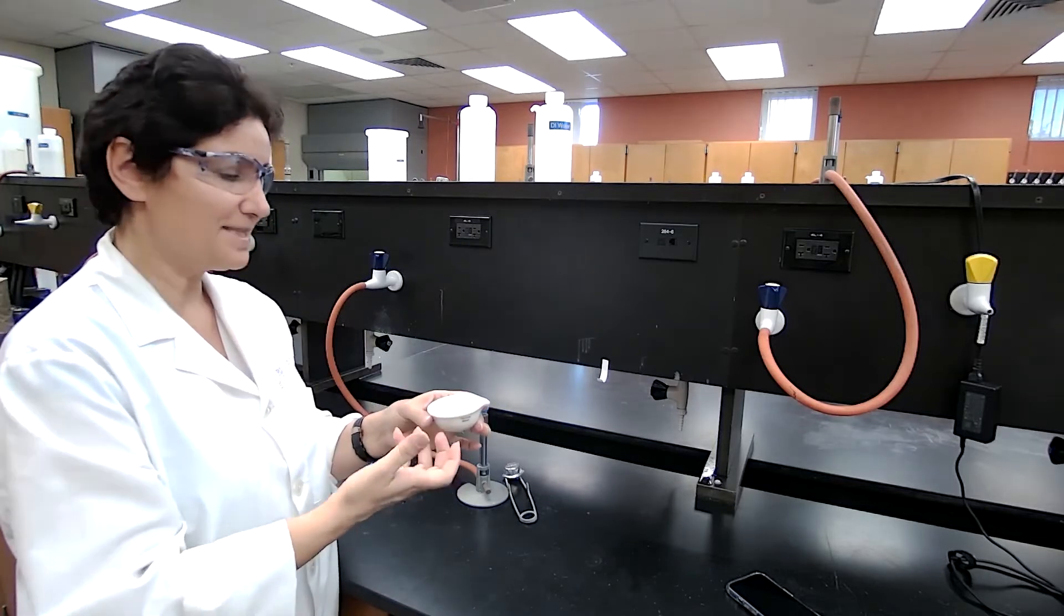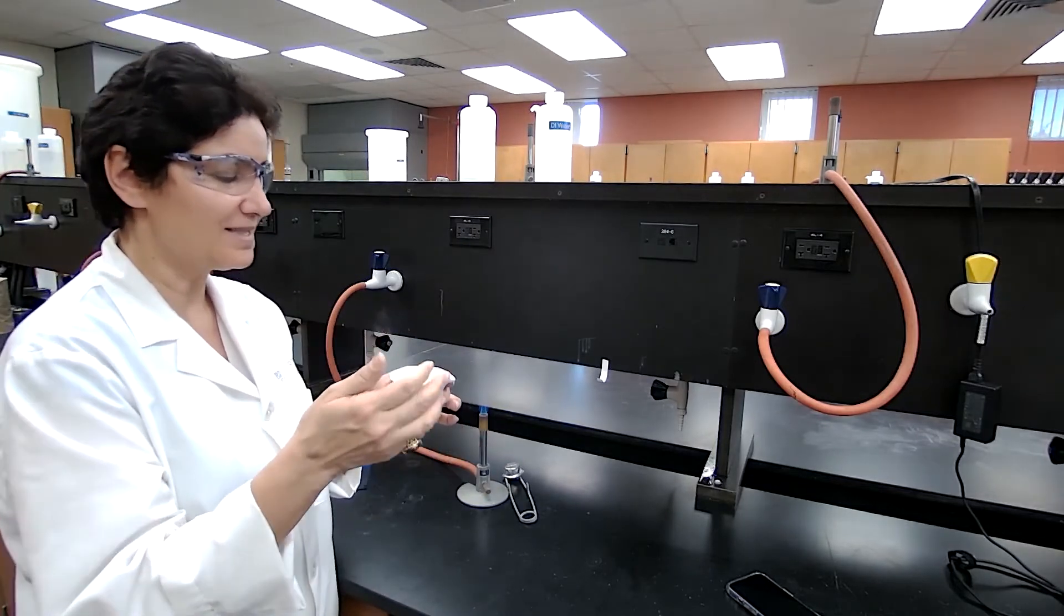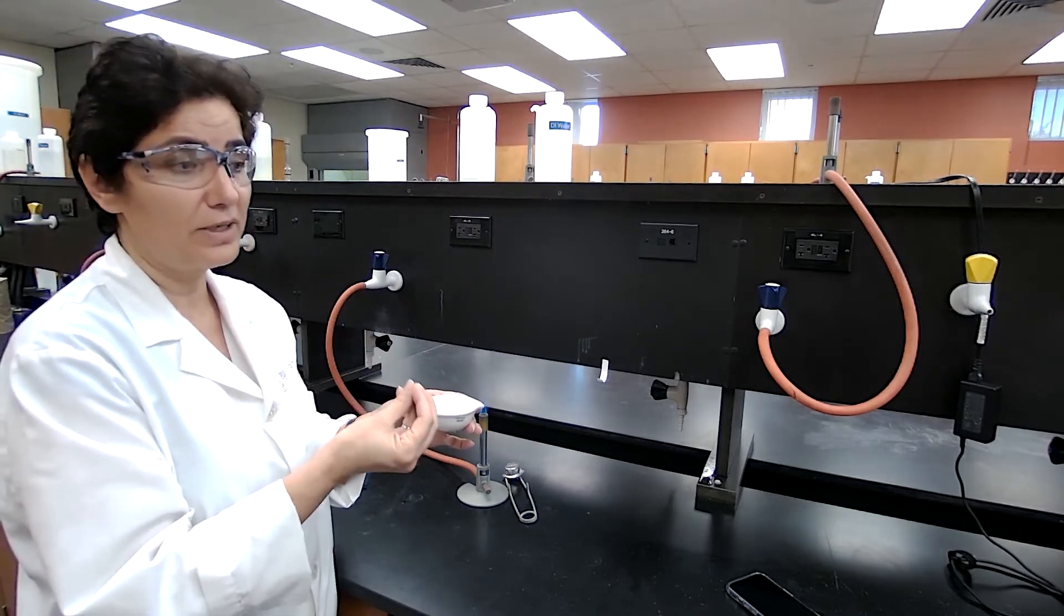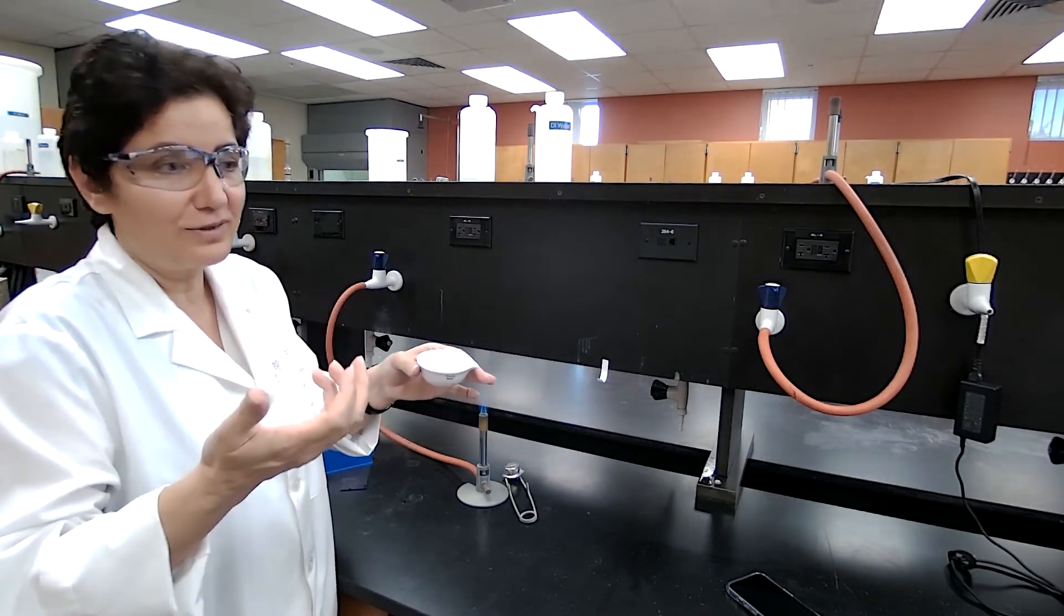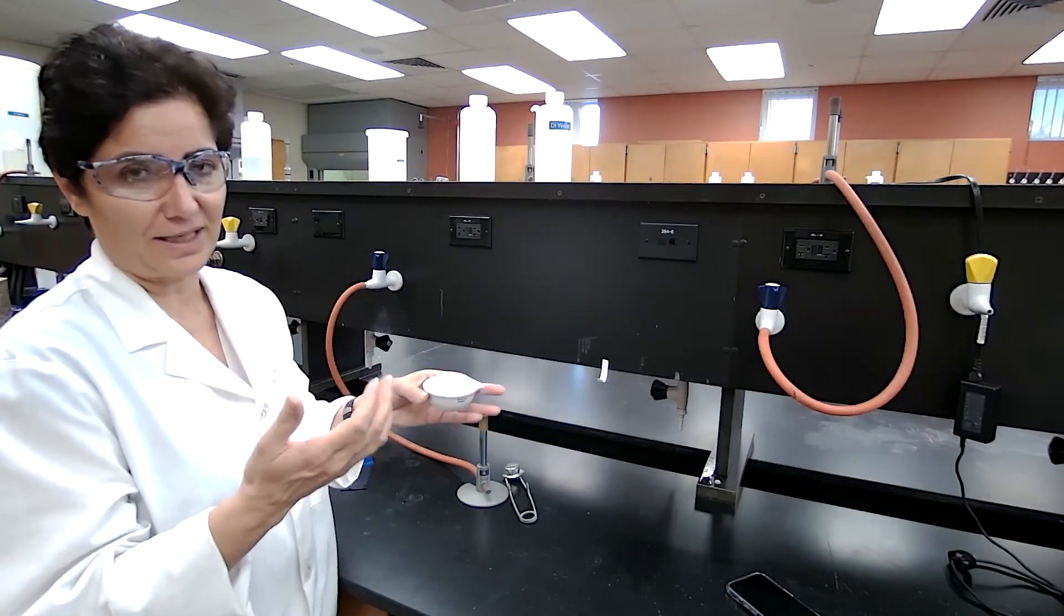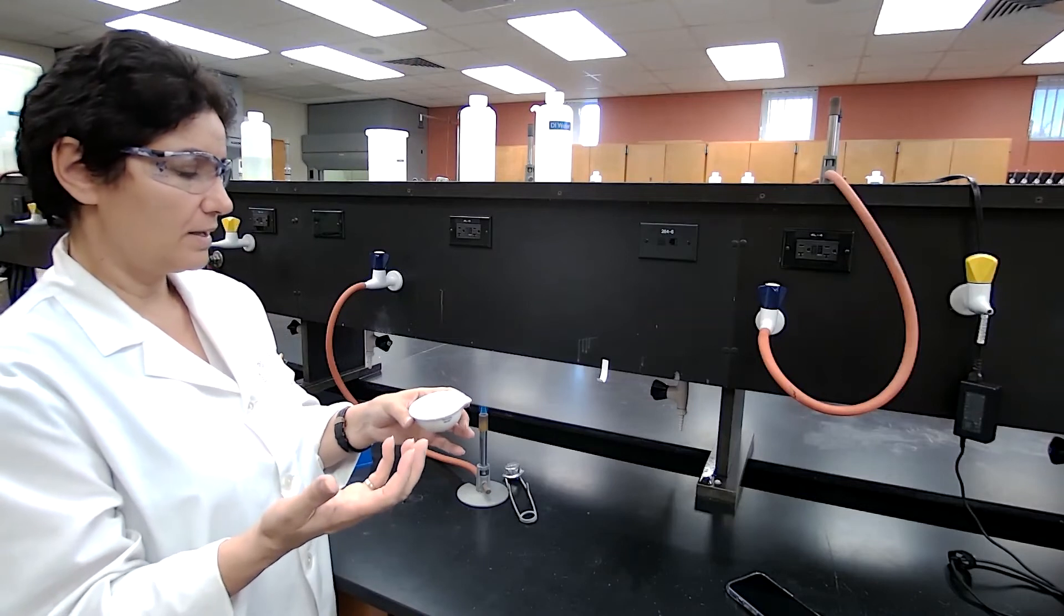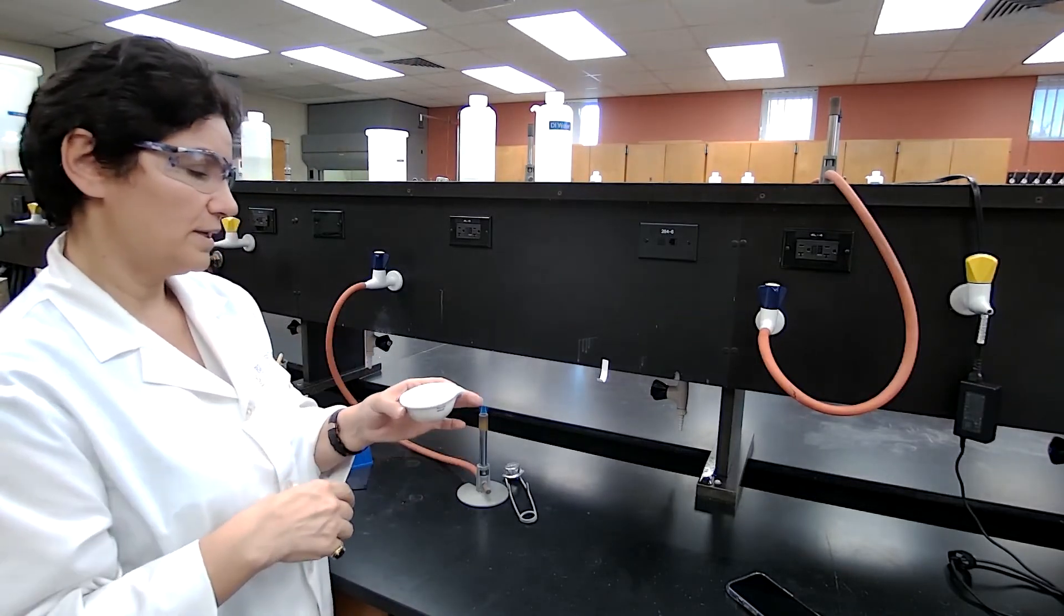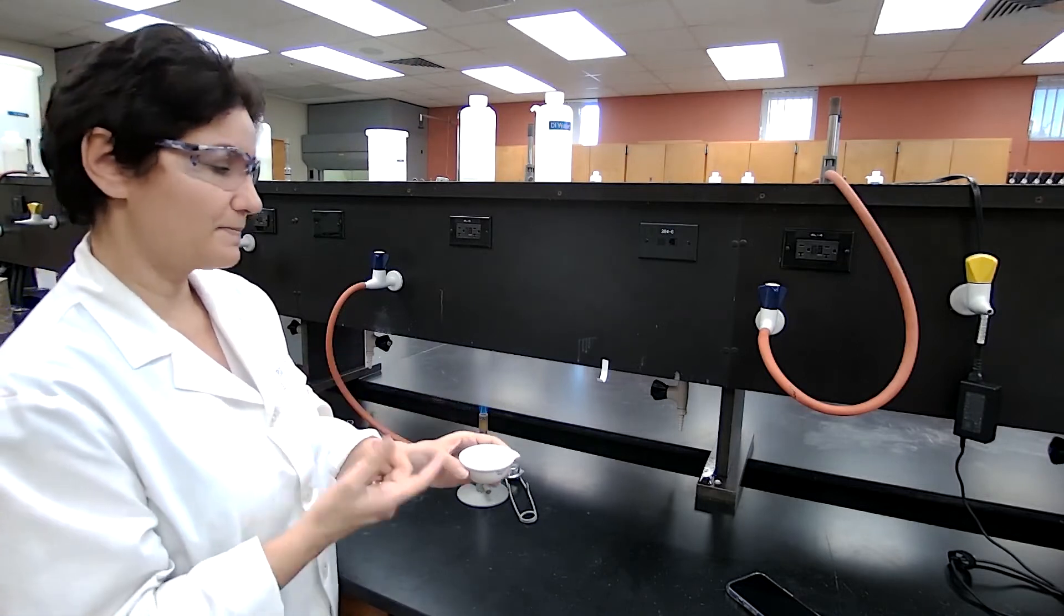That means ammonium ion is present. If you don't detect any ammonia in an unknown, you just say that there is no ammonia or ammonium ion present in the original solution. And that's basically the three soluble ions or cations that we are testing.